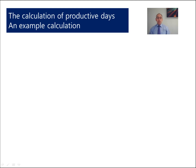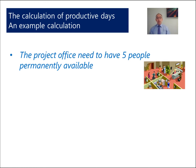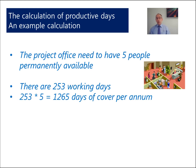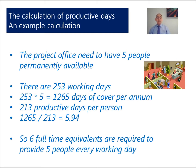We looked at the theory — now let's go through an example. We'll assume that for our project, we have a project office and we need 5 people every working day that the project office is open. So what's the calculation? Well, 253 working days times 5 people means that we need 1,265 days worth of cover each year. Now, in the calculation we saw there were 213 productive days. So we take our 1,265 and we divide it by 213 to give us 5.94 — so really, that's 6 people. We need 6 full-time equivalents to resource the project office so that for every working day, we have 5 people.